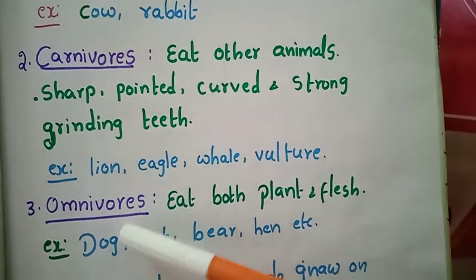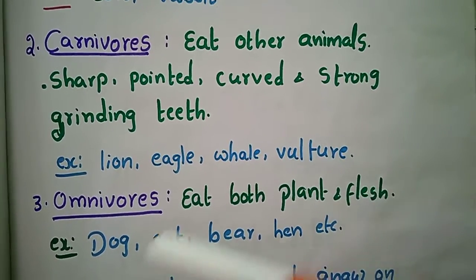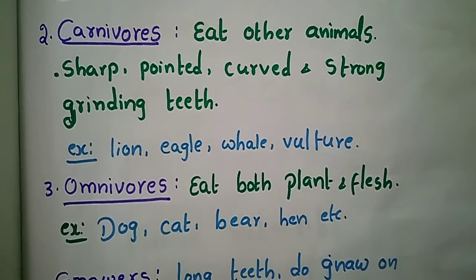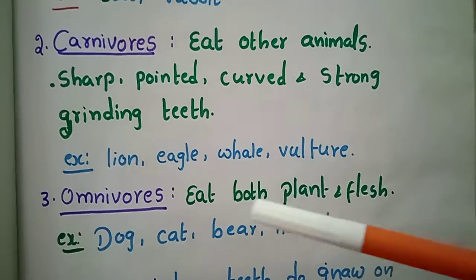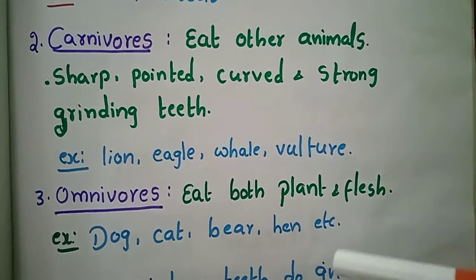Omnivores eat both plants and animal flesh. Examples include dog, cat, bear, and hen — animals that consume both plants and other animals.